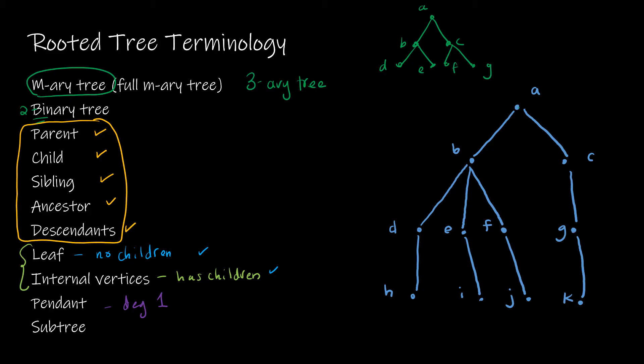A subtree is essentially a tree created from a portion of the original — similar to induced subgraphs from previous lessons. If I want to look at a subtree of C, it would just be C and K, starting with C as the root node, plus any descendants of C.